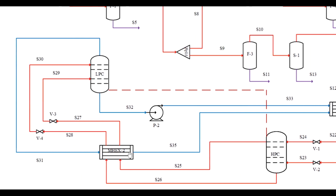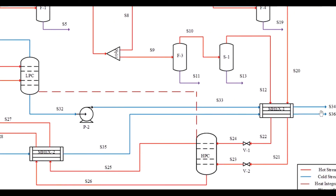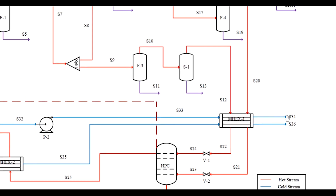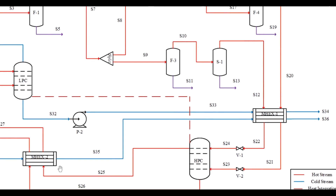These streams are cooled to cryogenic temperature and sent to the low pressure column after reducing pressure through a throttling valve. The crude separation takes place in the high pressure column while major separation occurs in the low pressure column, producing 99.9% pure nitrogen and oxygen. The vapor nitrogen S31 is sent to MHEX2 — the cold streams S31 and products gain heat while the hot streams S25 and S26 lose heat — and the liquid oxygen S33 is pumped and sent through MHEX1.